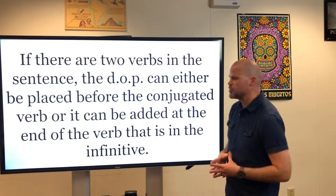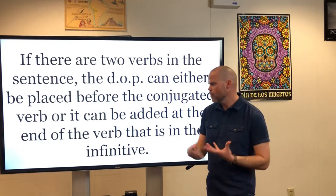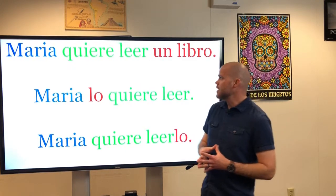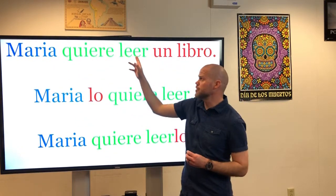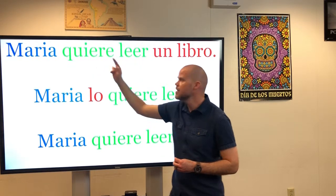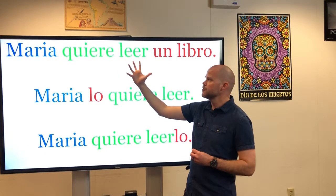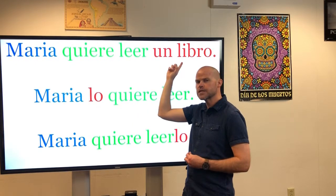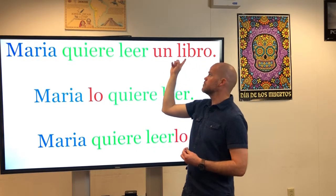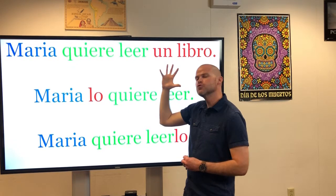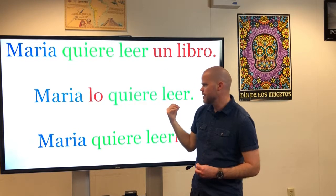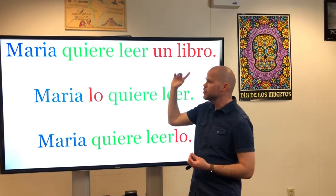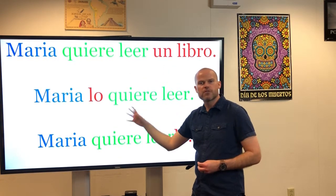If there are two verbs in the sentence, the direct object pronoun can either be placed before the conjugated verb, as we saw, or added to the end of the second verb, which is in the infinitive. For example, Maria quiere leer un libro — Maria wants to read a book. The direct object is un libro, masculine and singular, so the pronoun is lo. We can say Maria lo quiere leer, or Maria quiere leerlo — both mean Maria wants to read it. These are totally interchangeable; both are correct.